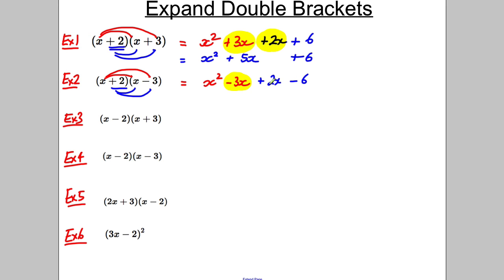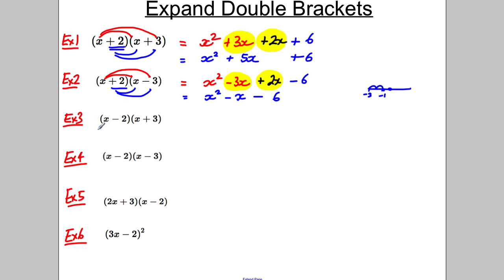Positive 2 multiplied by negative 3 is negative 6. Collecting like terms: negative 3x and positive 2x combine to give negative 1x. So the result is x² − x − 6.